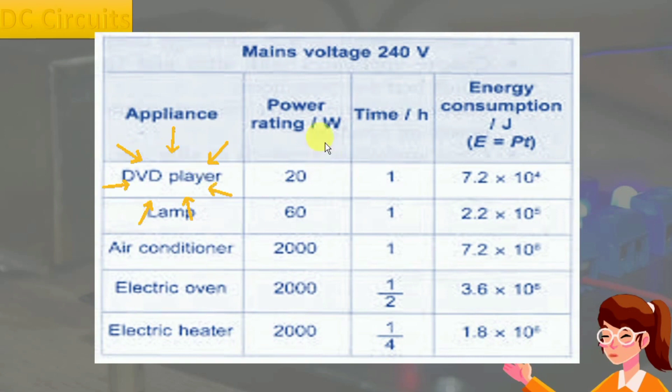Example: DVD player operates at 20 watts for one hour and consumes 7.2 times 10 to the power 4 joules of energy. The lamp operates at 60 watts for one hour and consumes 2.2 times 10 to the power 6 joules of energy.